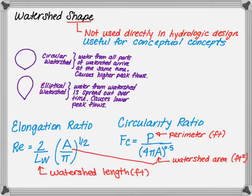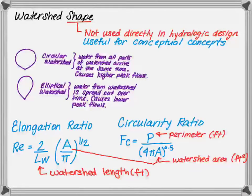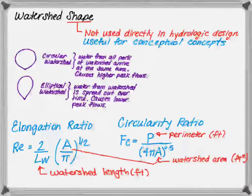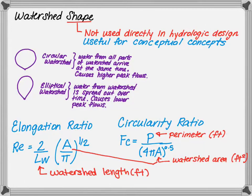There are two ways to determine the shape of the watershed. The first is the elongation ratio. It states that the elongation ratio, Re, is equal to 2 divided by the watershed length, Lw, times the quantity of the watershed area divided by pi raised to the 1 half power. Pause the video and think about what the value of Re would be for a circular watershed. Remember the length of a watershed for a circle would be the diameter and the area is pi r squared.